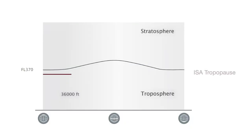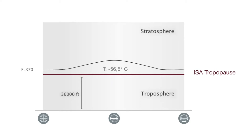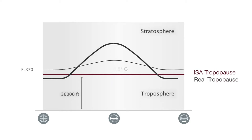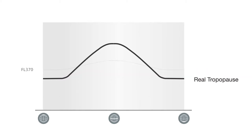In this part, we will focus on the tropopause. Let's see the vertical temperature distribution in the whole troposphere. The ISA tropopause occurs at the altitude of 36,000 feet, where the temperature reaches minus 56.5 degrees Celsius. But in the real atmosphere, the height of the tropopause varies.